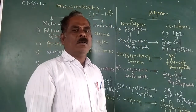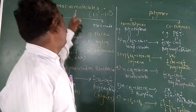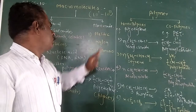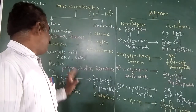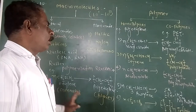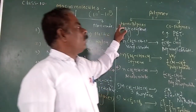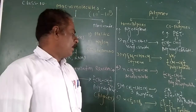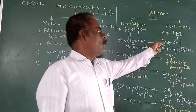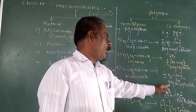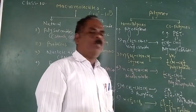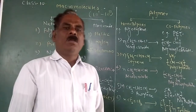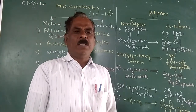Questions that may be asked in the examination: define macromolecule, natural macromolecule, artificial or manmade macromolecule, define polymerization reaction, define monomer, polymer, homopolymer, and copolymer. Sometimes questions will be asked about the uses of polyethylene, polypropylene, polystyrene, polyacrylonitrile, and teflon. Such types of questions may be asked in the examination. Thank you.